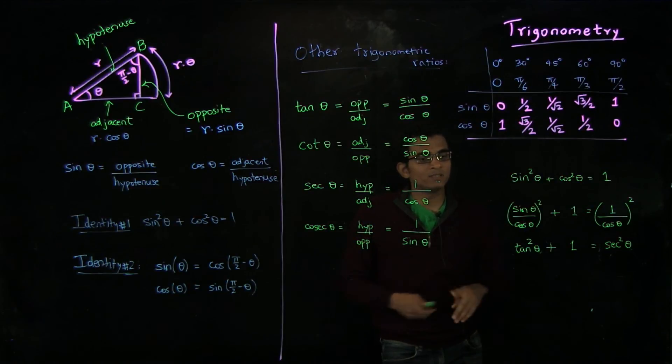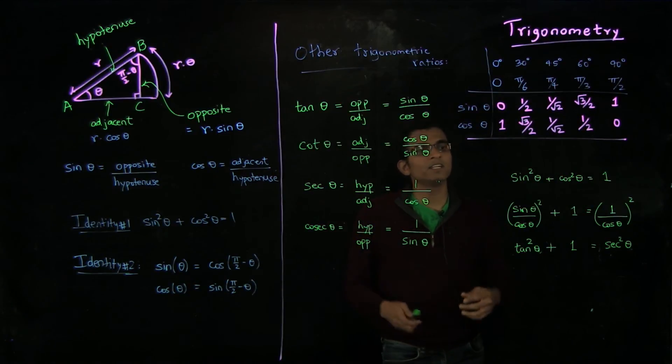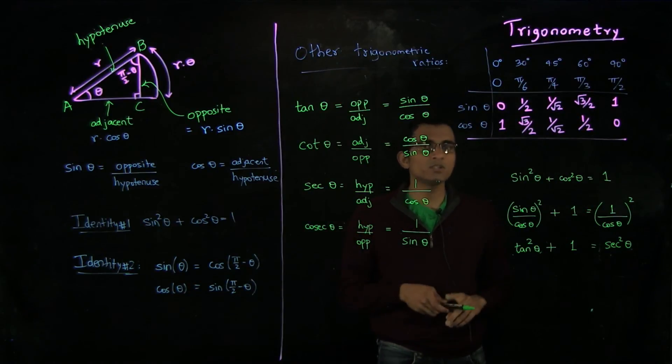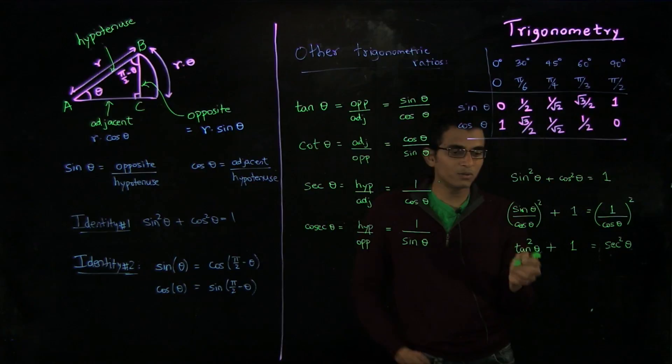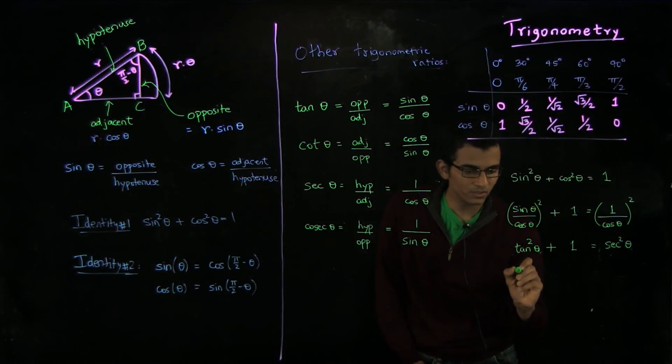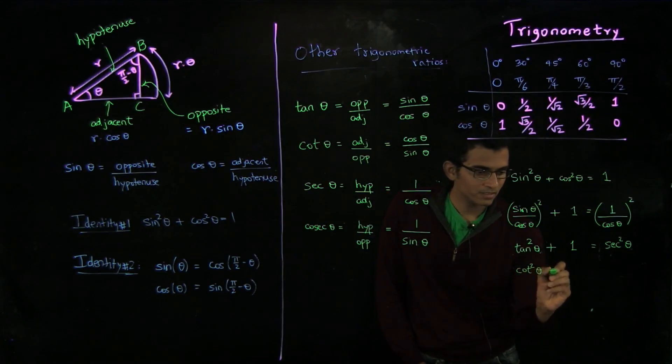It is very important to get used to these ratios and work out new identities on your own. For example, you can try deriving a similar identity involving cot and cosec.